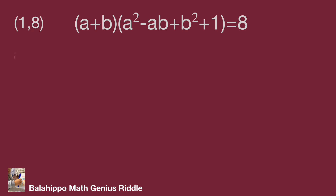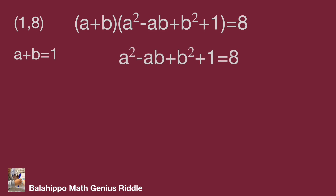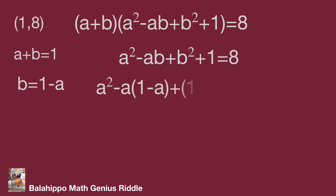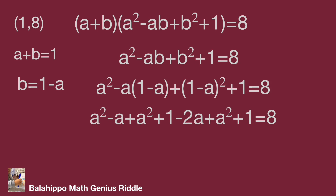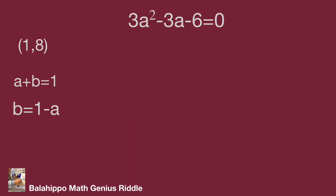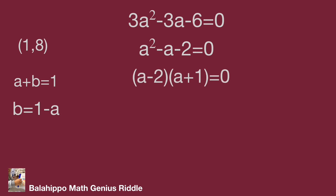Reviewing number group (1, 8): a plus b equal to one and a squared minus ab plus b squared plus one equal to eight. With b equal to one minus a, substituting into the second quantity gives three a squared minus three a minus six equal to zero. Dividing by three: a squared minus a minus two equal to zero, which factors as (a minus 2)(a plus 1) equal to zero. So a equals two or minus one, giving b equals minus one or two.